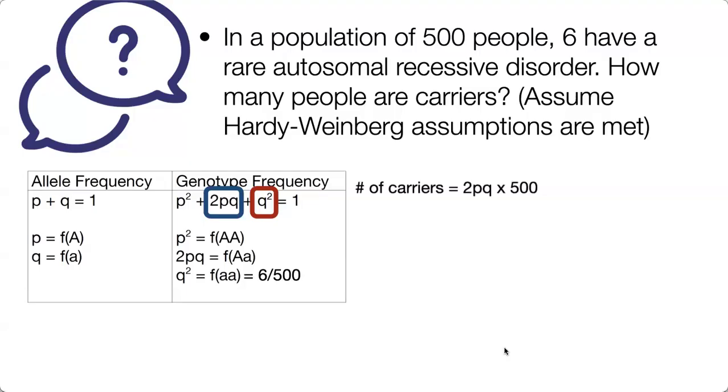To identify the number of carriers, we will solve for 2pq and then we will times that by 500. So let's break it out: 2 times p times q.